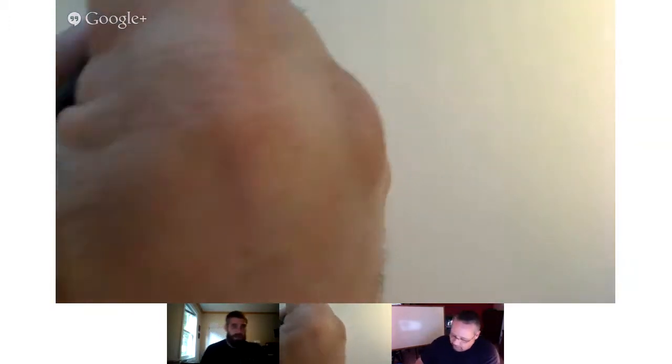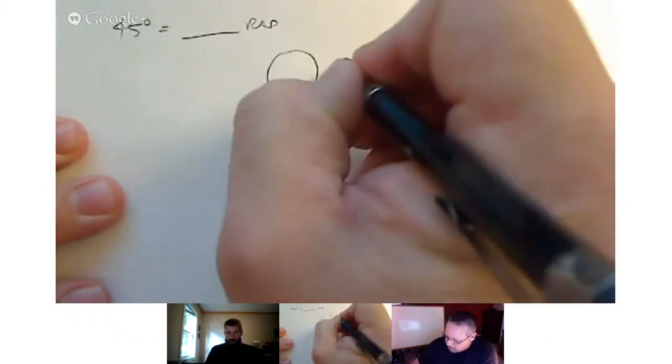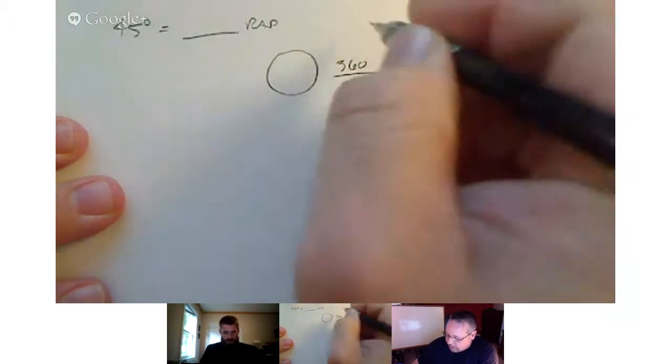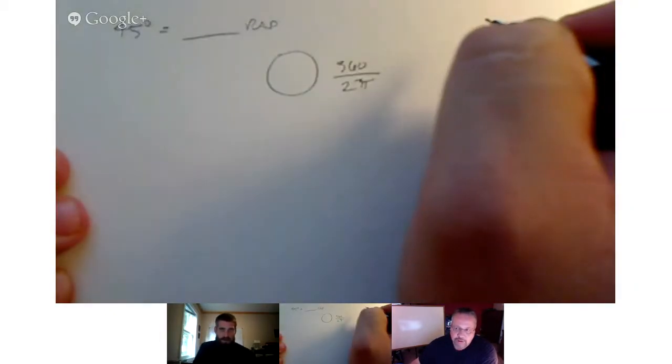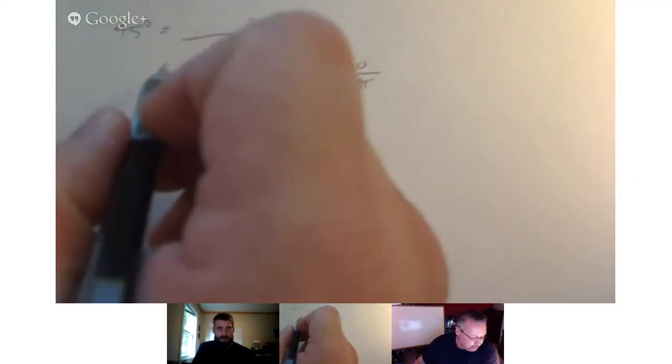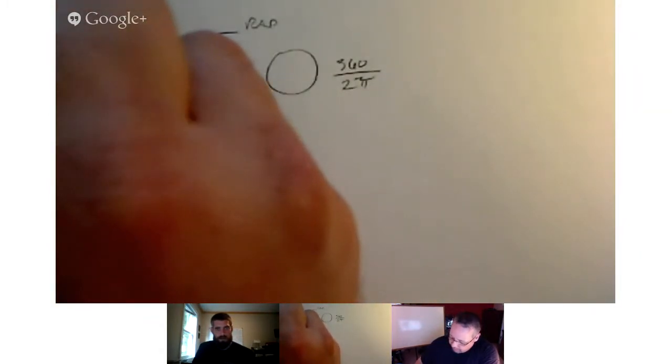All right, so the first one he gave us was converting 45 degrees. I put the whiteboard screen on my big picture so I can see pretty well. So 45 degrees is equal to what in radians? The formula they provided was: the circle is 360 degrees, which is also 2 pi. So we've got 2 pi over 360, or 180 over 2 pi, whichever way we're going. In this case, because we want degrees on the bottom, it would be 45 times 2 pi over 360.